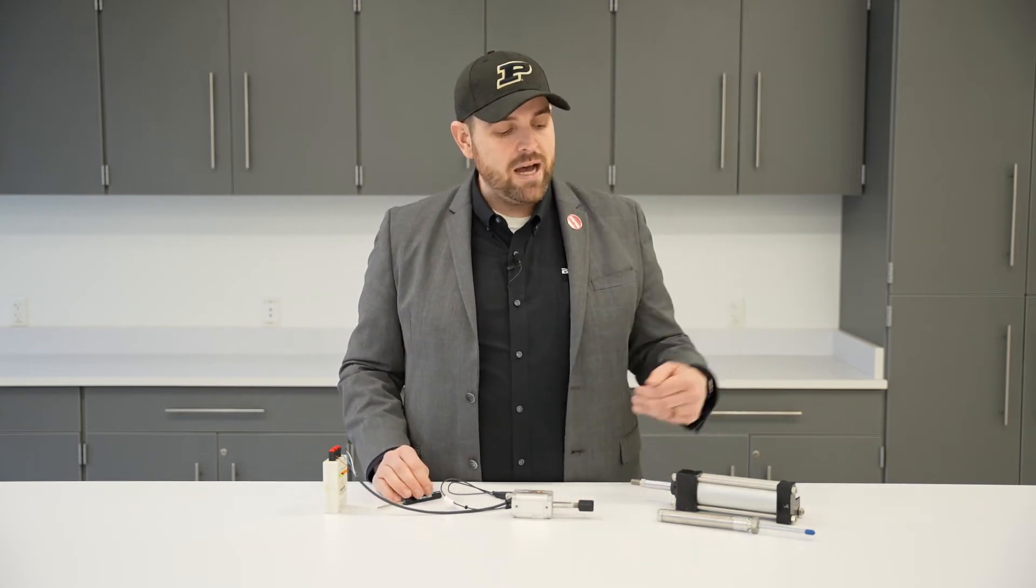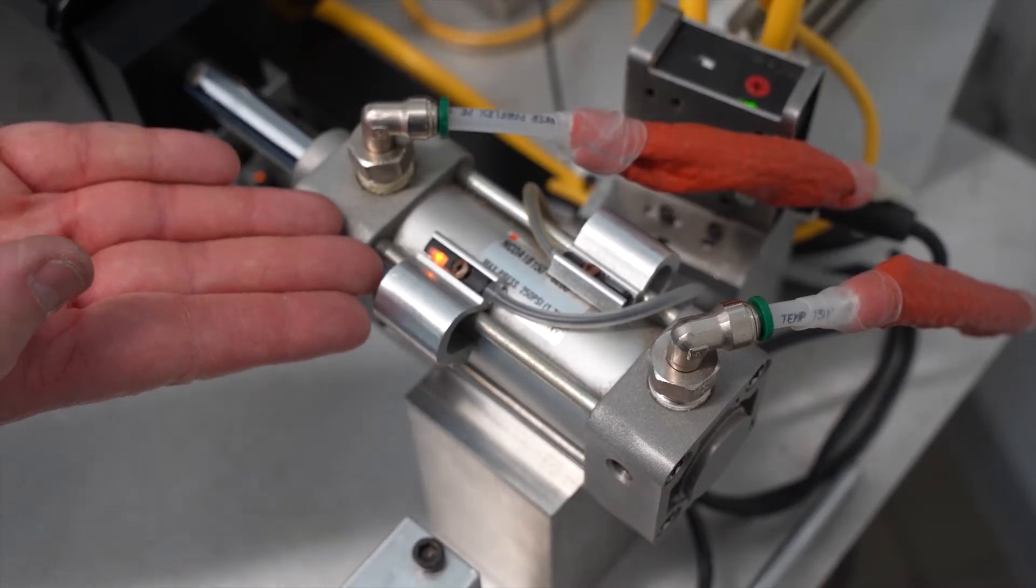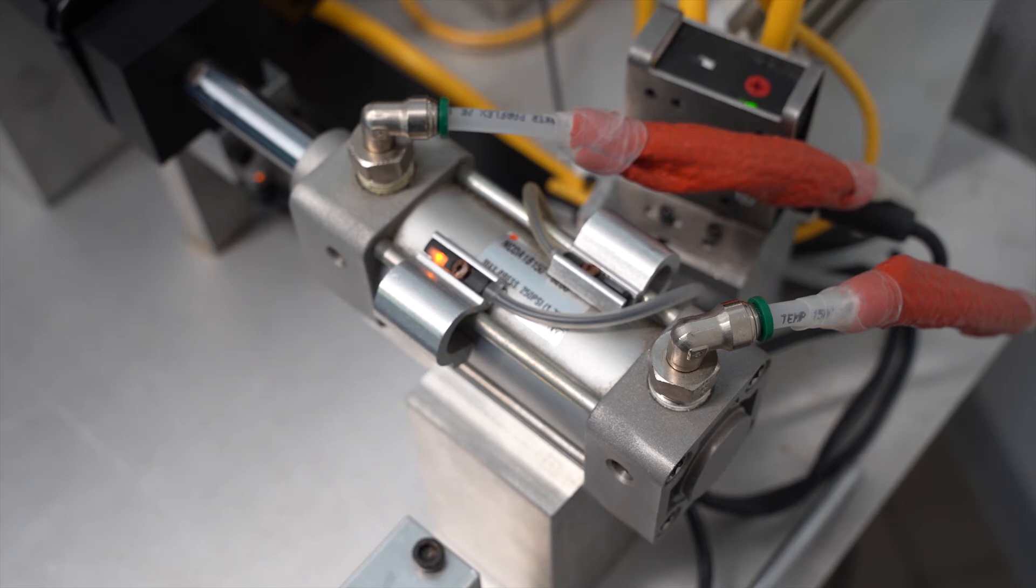Other styles of mounting can be on like a round body or a tie rod style. There are brackets that allow you to mount to those style of cylinder sensors, but they work the same way where the sensor detects the magnetic field of a magnet mounted on the piston.